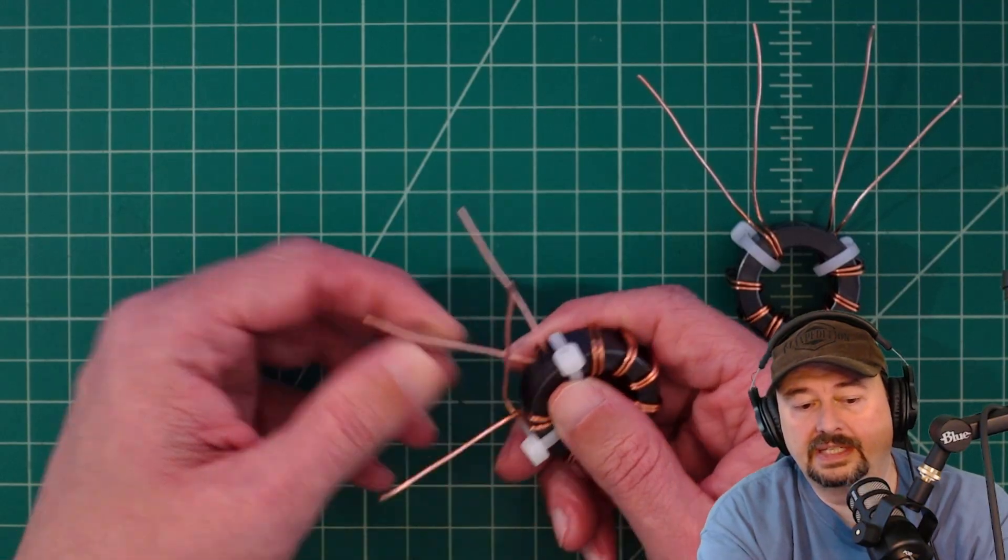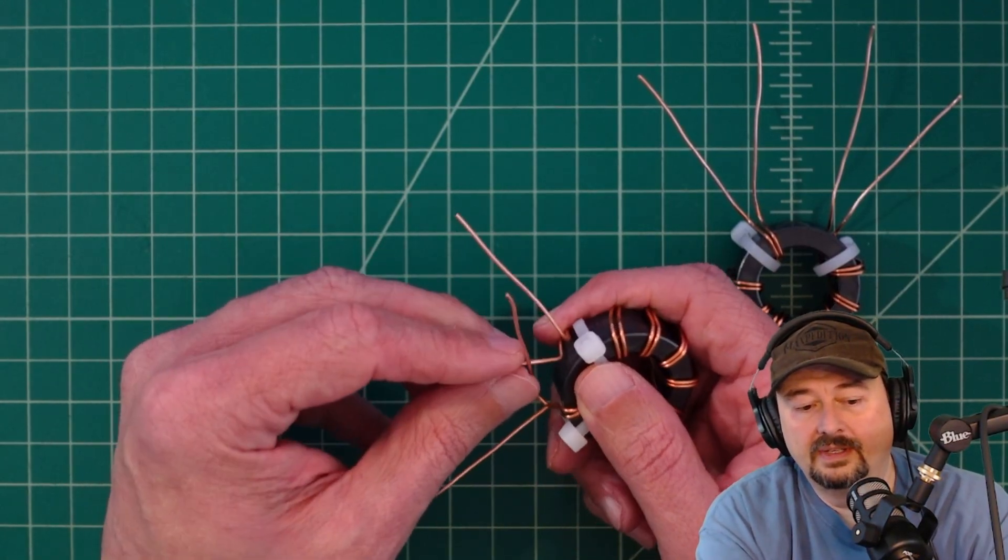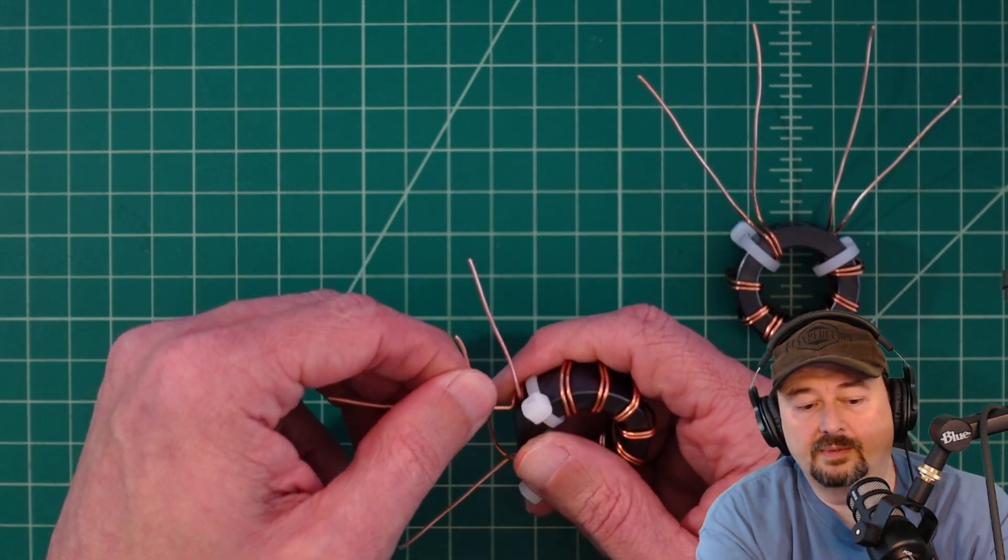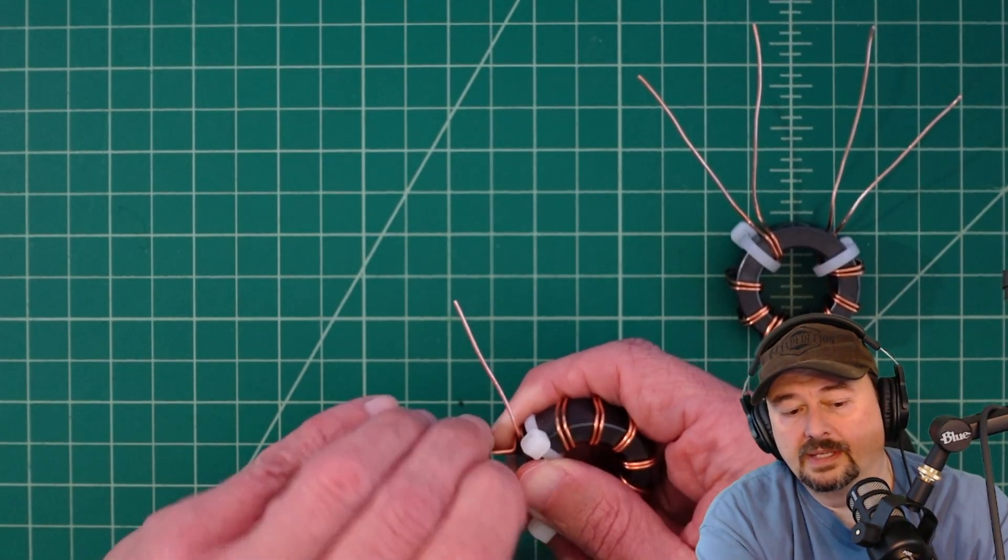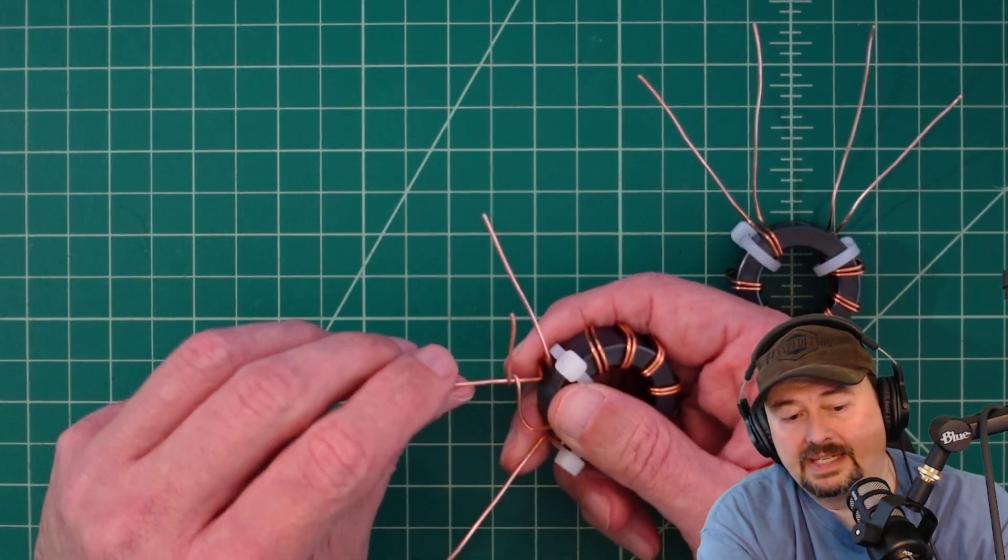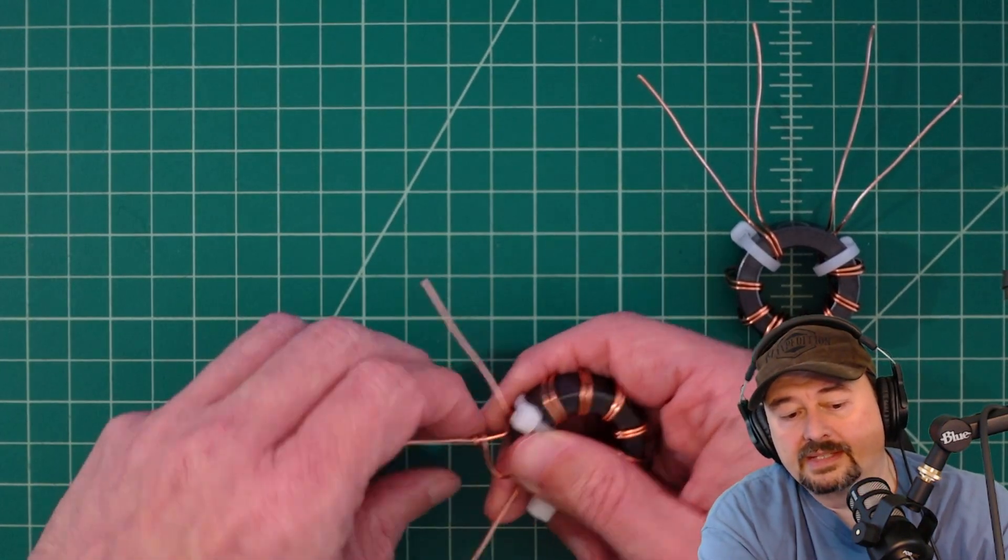What I want to do is take this one and bend it over to touch this one. Then I want to carefully wind this one around a few times and try to make that as tight as possible as I'm doing it.